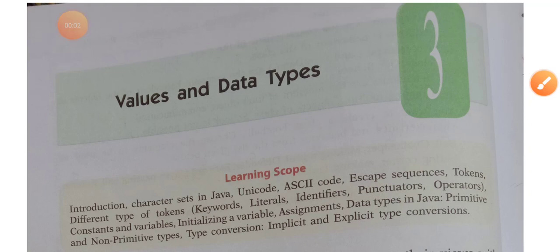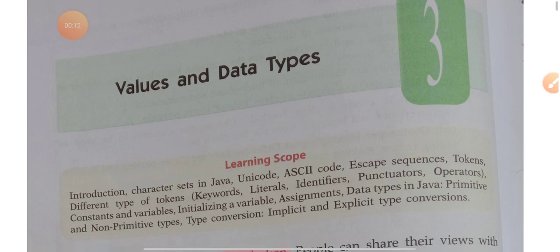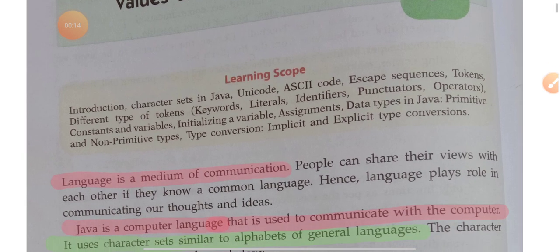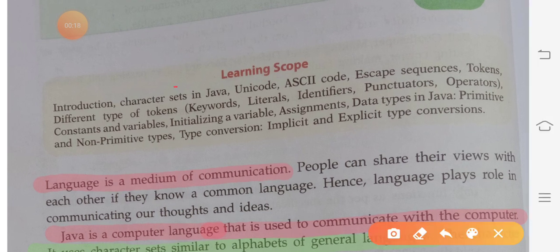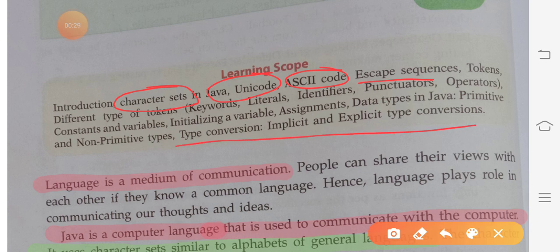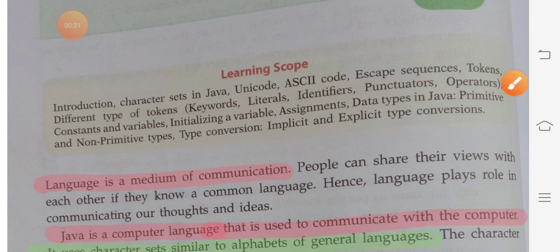Good morning students. We have completed our second chapter, so let us start our third chapter — Values and Data Types. In this chapter, we will discuss the character set used in Java, encoding schemes like Unicode and ASCII code, escape sequences, tokens, types of tokens, and lastly type conversion.